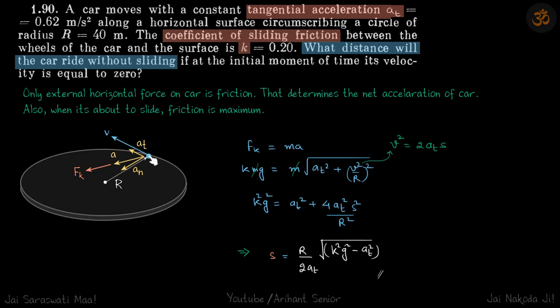The car has tangential acceleration, so it will have two accelerations overall: one is at tangential and one is normal towards the center. Its overall acceleration will be somewhere in between the two accelerations. That means the friction will also act in that direction where the overall acceleration is.